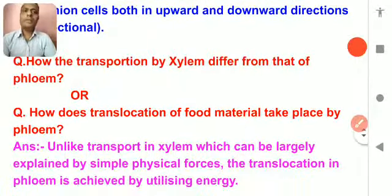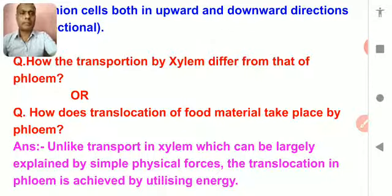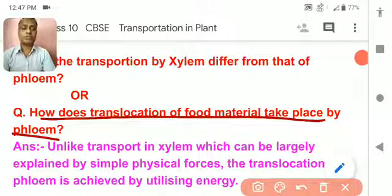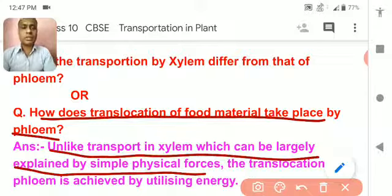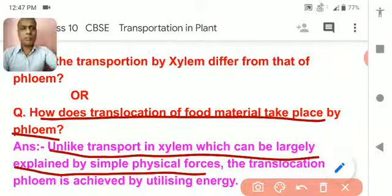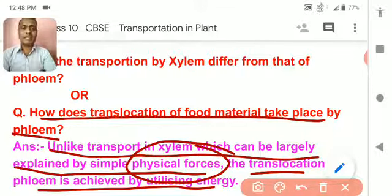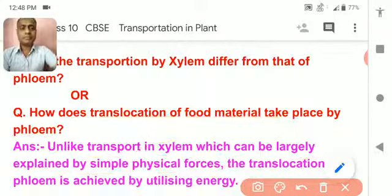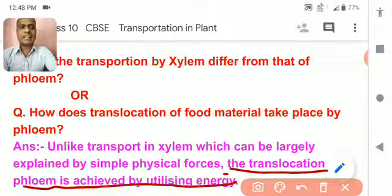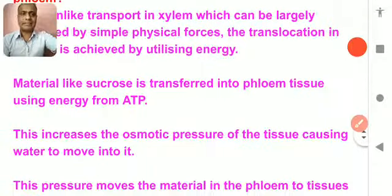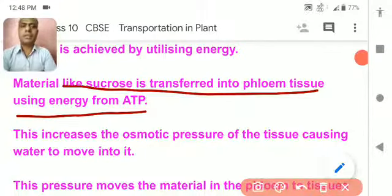How does transportation by xylem differ from phloem, or how does translocation of food material take place by phloem? Unlike transport in xylem, which can be largely explained by physical forces — in xylem, transport takes place by diffusion, active transport, transpiration pull, and many more physical processes. But in case of translocation in phloem, active transport takes place by utilizing energy. Translocation of food takes place by utilizing energy. Material like sucrose is transferred to the phloem tissue using energy from ATP.